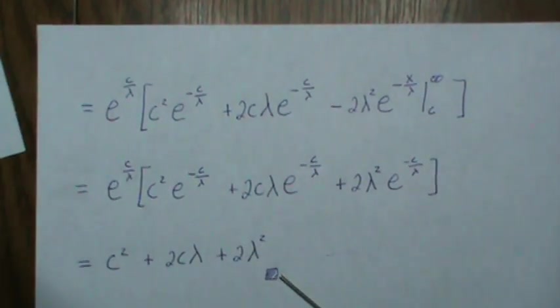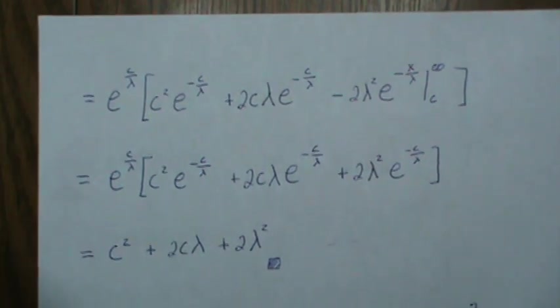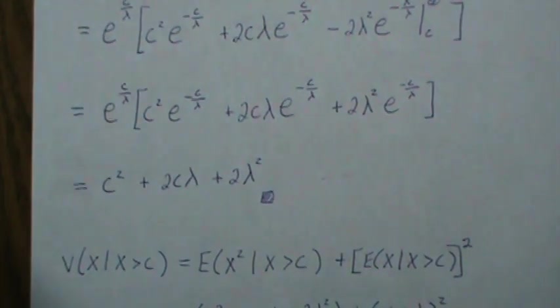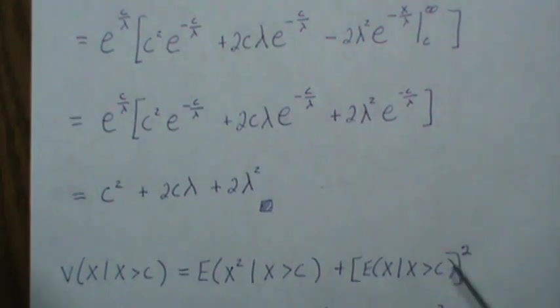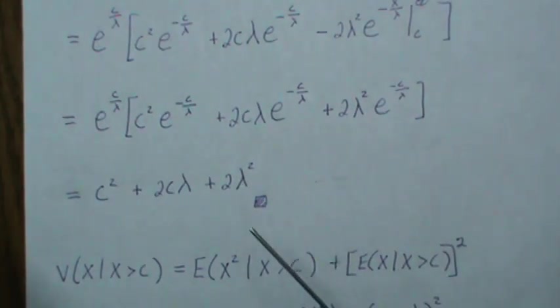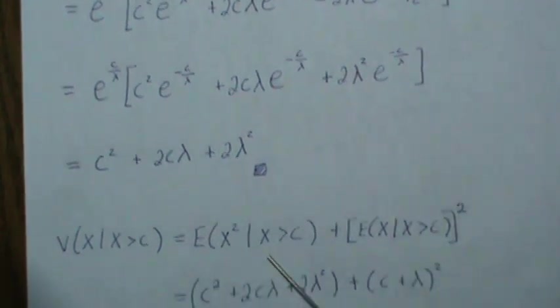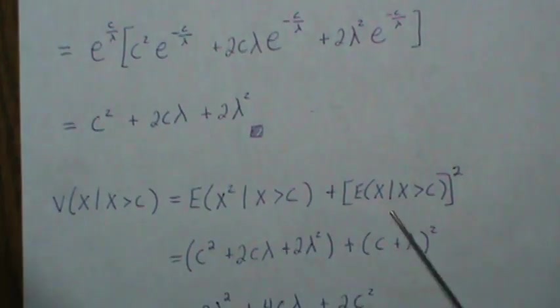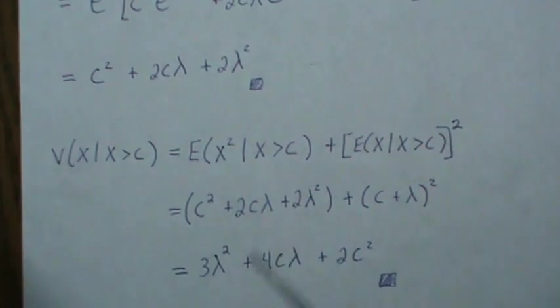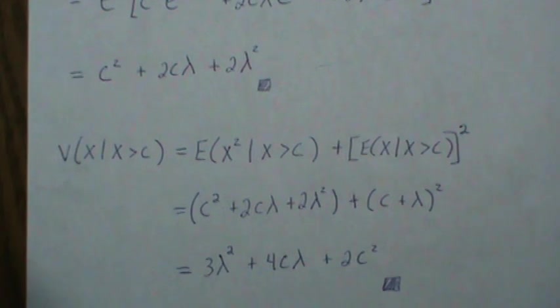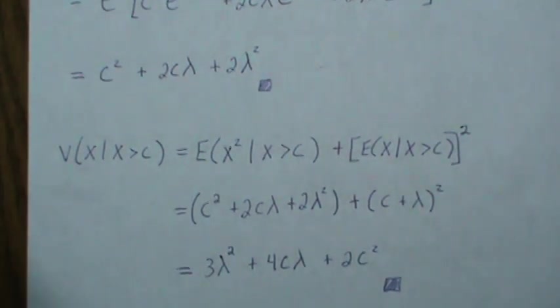Then the variance by definition is just the expected value of x squared minus the mean squared and we just calculated each of these previously. That is this which is here and the mean was C plus lambda, we square it, combine like terms and we get 3 lambda squared plus 4C lambda plus 2C squared.